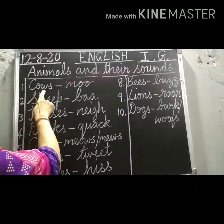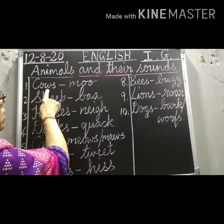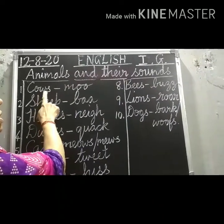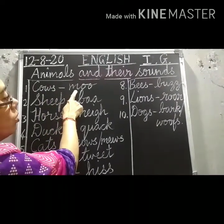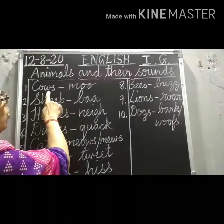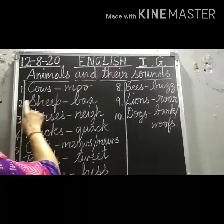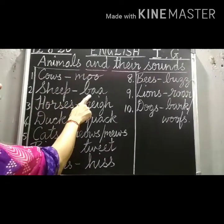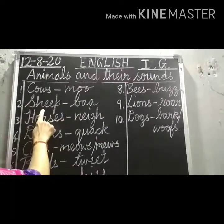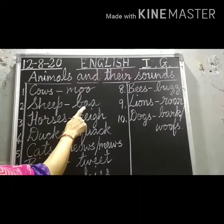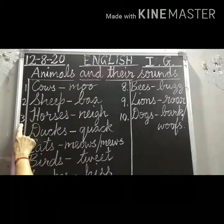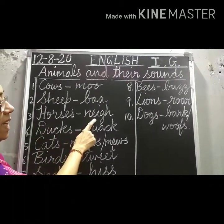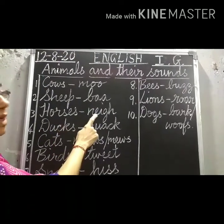Number one: Cows. What do the cows say? The cows say moo. The sound of the cows is moo. Number two: Sheep. Sheep says baa. Number three: Horses. Horses say neigh.